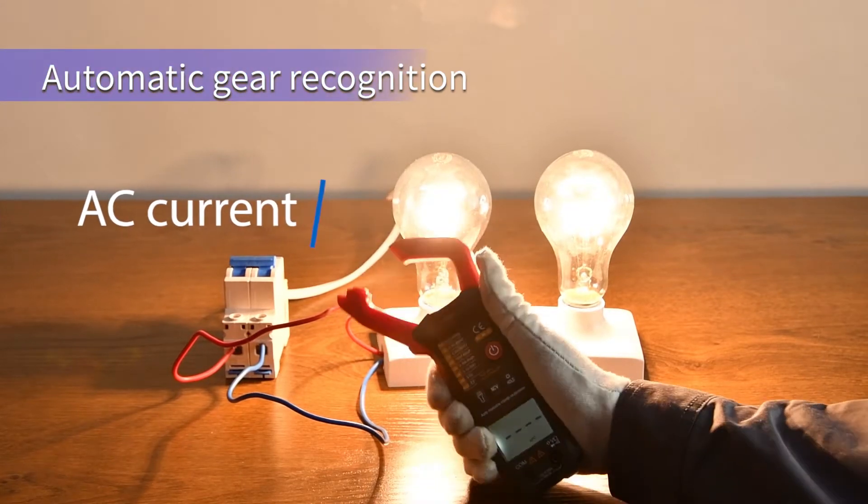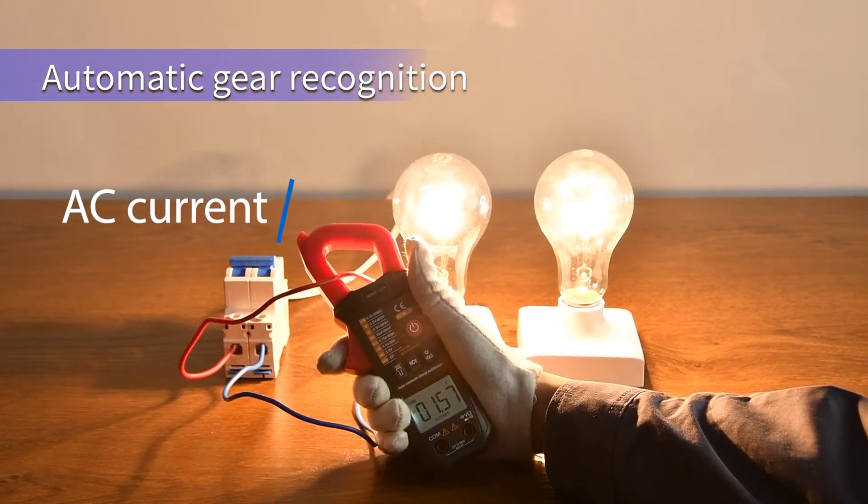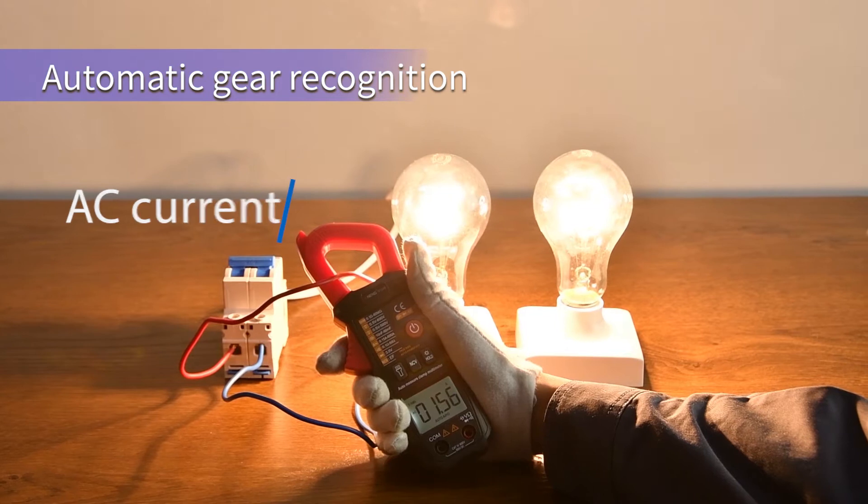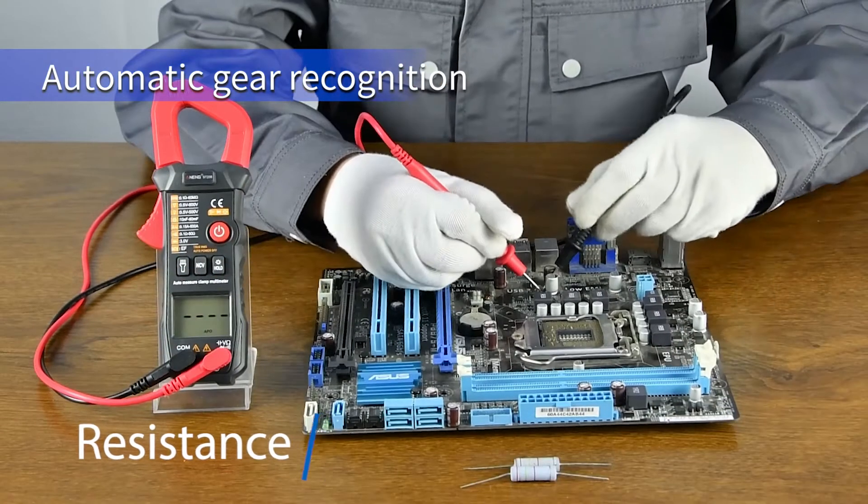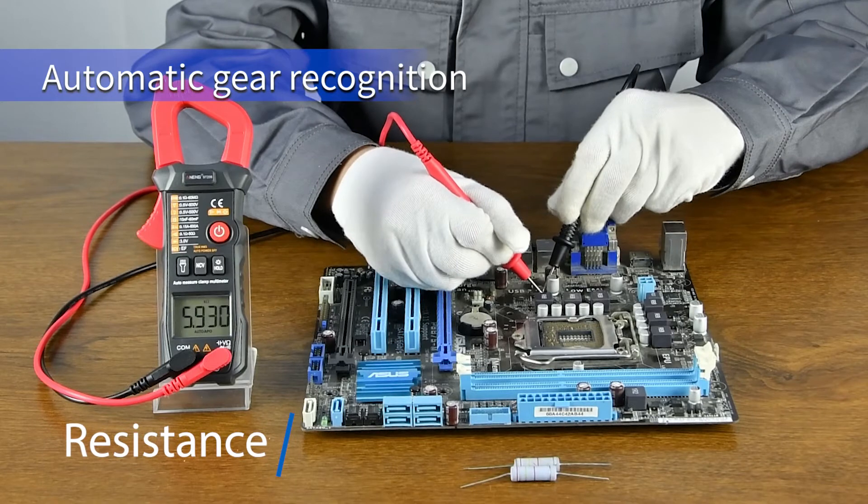AC current measurement can only be measured in the automatic recognition gear. Resistance measurement can be measured on both sides.